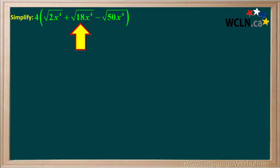We're asked to simplify this expression, which involves adding and subtracting radicals with numbers and variables. The expression has brackets with a 4 outside the brackets, so we start by using the distributive property to clear the brackets.